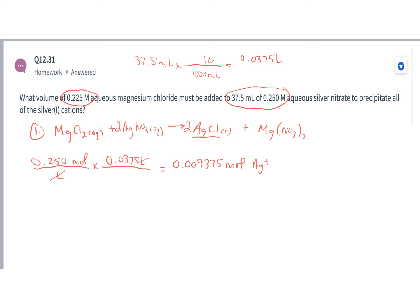And looking at the equation, for every 1 mole of silver, I'm going to need 1 mole of chloride to precipitate that out. So how much magnesium chloride am I going to need?